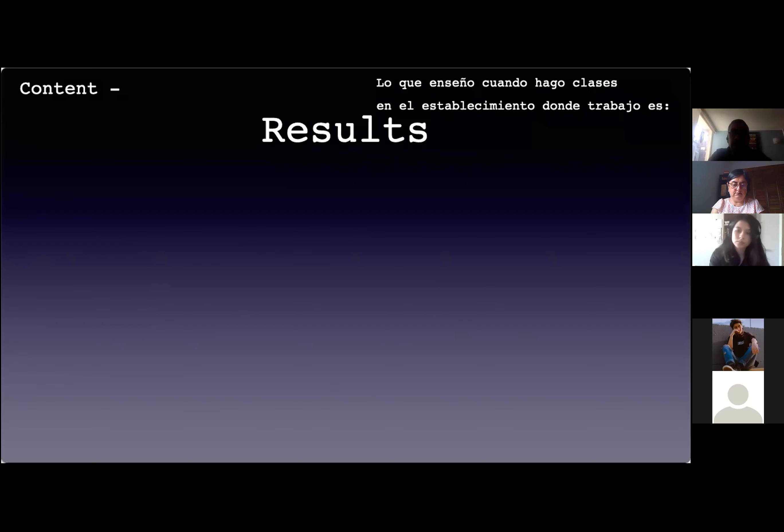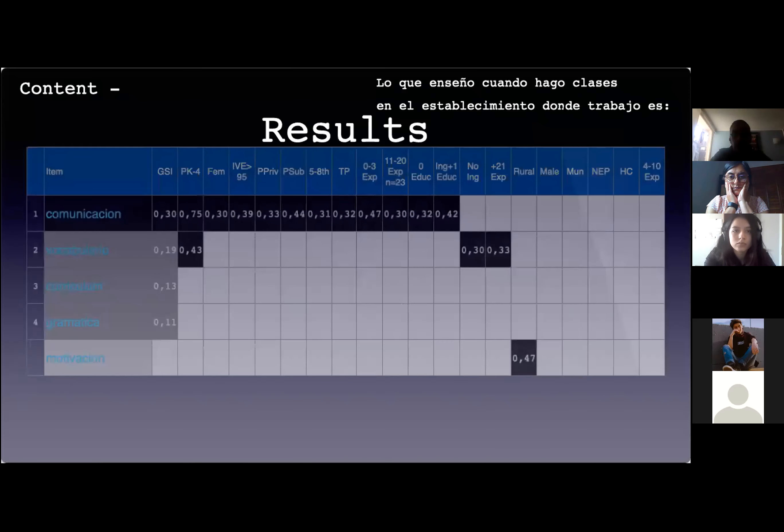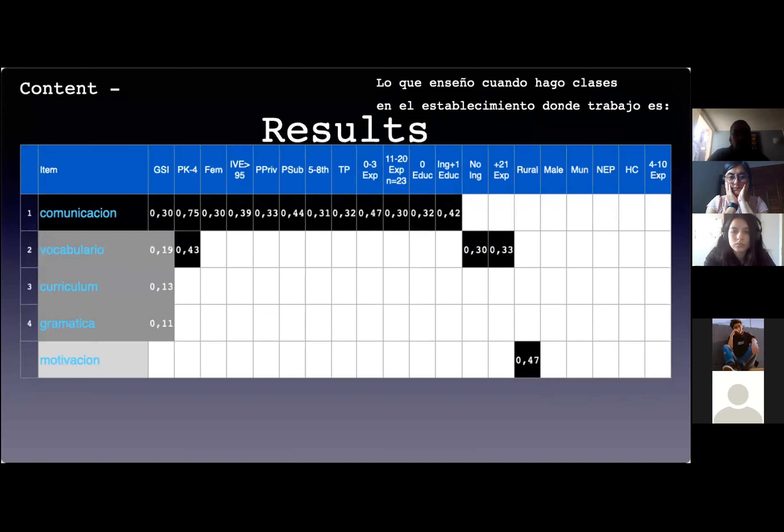Finally, when the social representation of learning English is seen from the content perspective—'Lo que enseño cuando hago clases en el establecimiento donde trabajo es'—we observe a rather dimly configuration of the social representation, where COMUNICACIÓN appears as the dominant item for the central kernel, a pattern that is shared by several subgroups. The teachers of young learners' subgroup present an unusually strong salience index for COMUNICACIÓN, together with a second item as a configuration of their social representation.